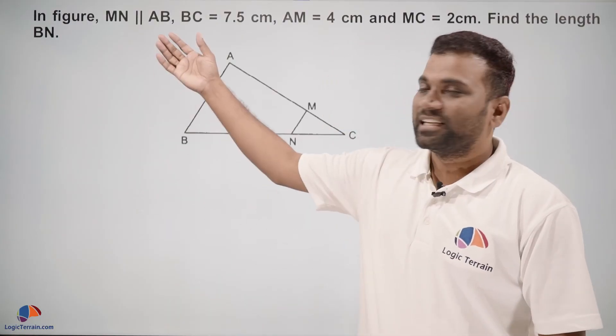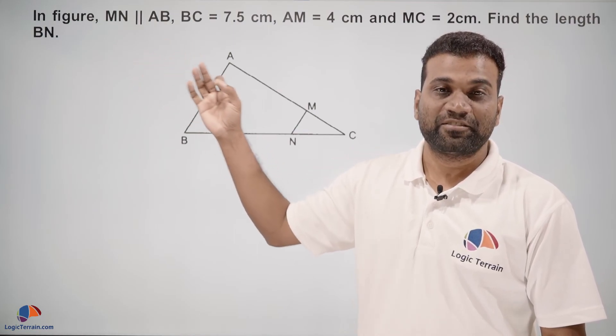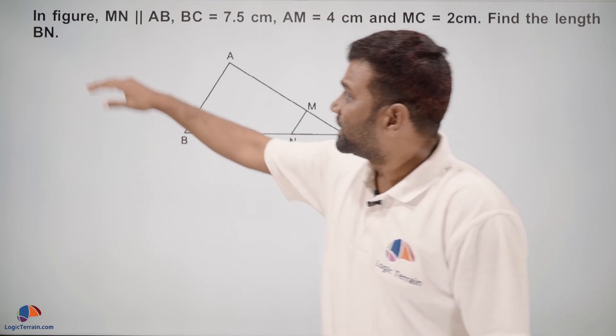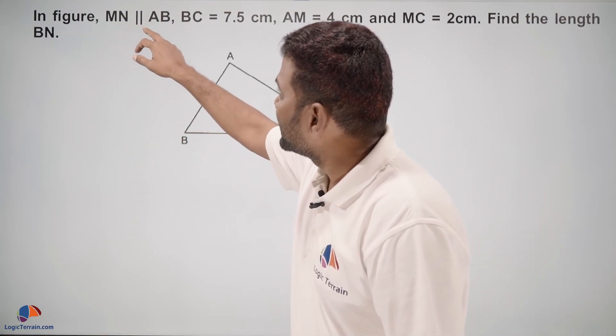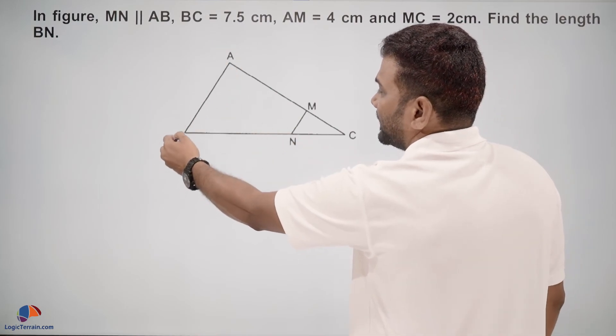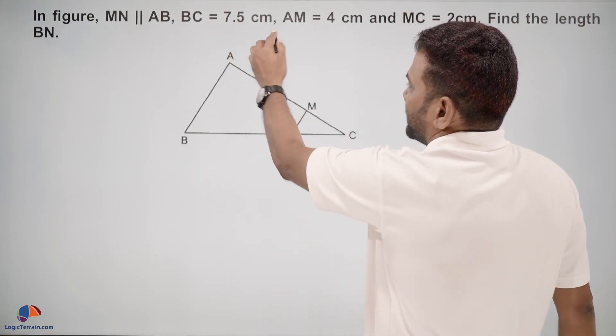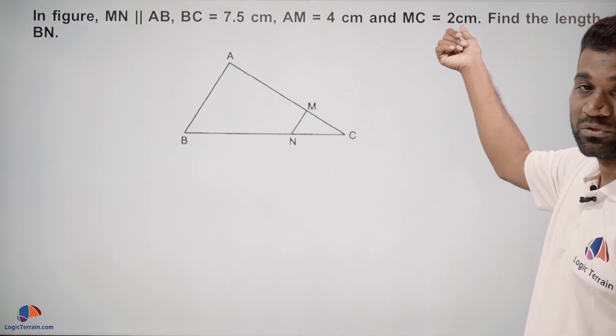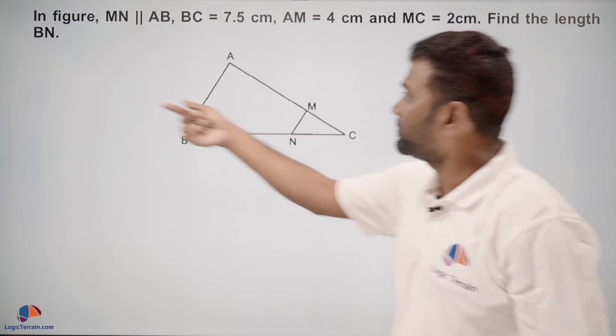Hello dear students, here is an important question from a previous year's board exam. In the figure, MN is parallel to AB. BC is 7.5 cm, AM is 4 cm, and MC is 2 cm. Find the length BN.